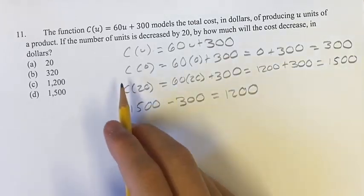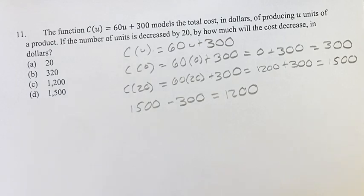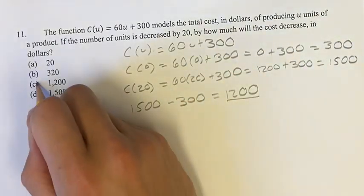Which again is that 60 times 20 I was talking about earlier. But if you don't notice that right off the bat, you can just do it by hand. So 1,200 is going to be our answer, which is C.